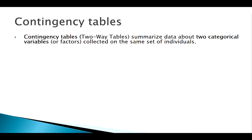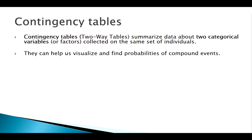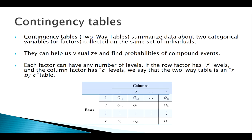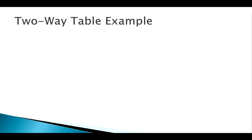Contingency tables are basically an extension of a frequency table to two variables. When we're looking for compound events and probabilities, they're very useful. Remember our terminology: if we have multiple variables, we often call them factors, and certain values of those variables we call levels. The row variable has R levels, the column variable has C levels, so we classify the table as an R times C table — rows are mentioned first.